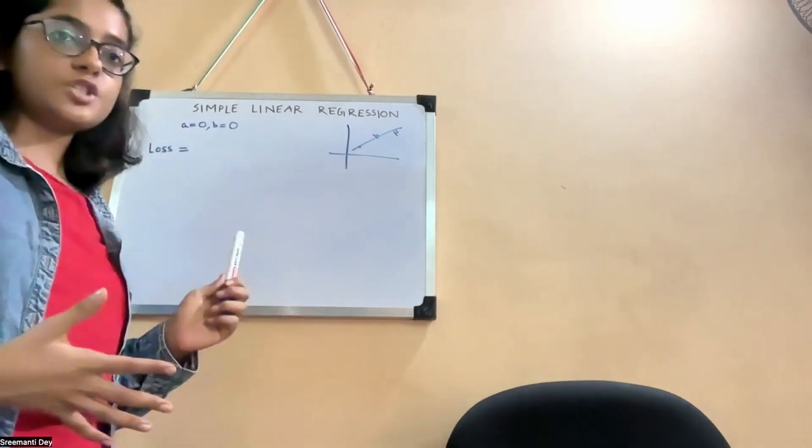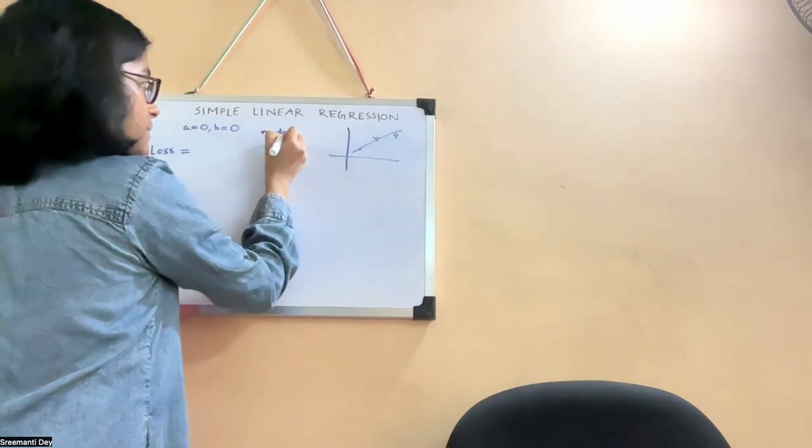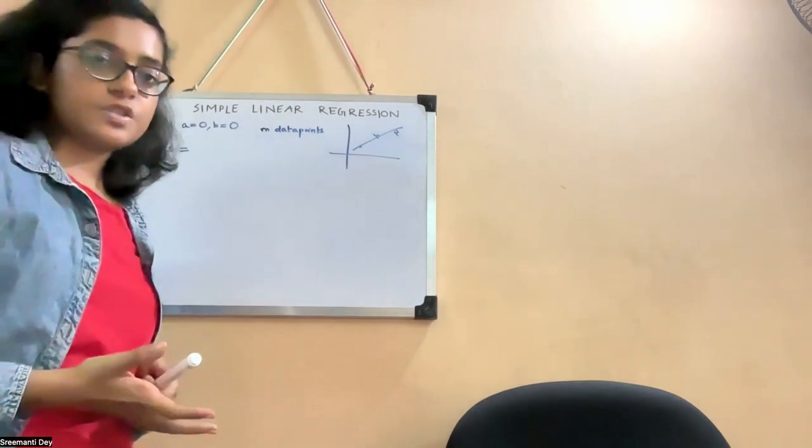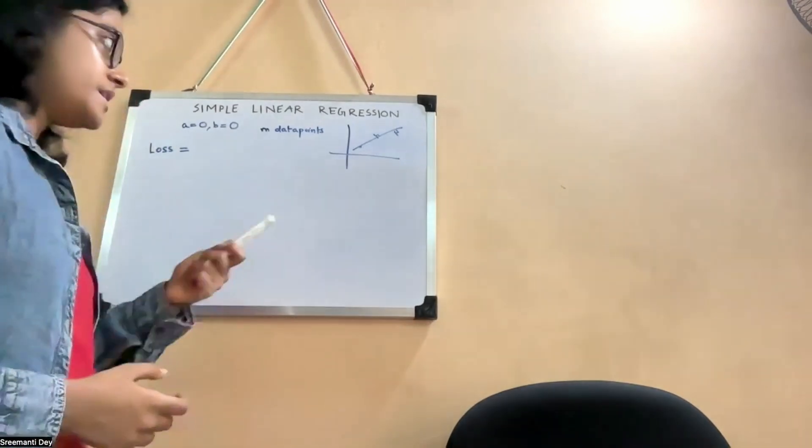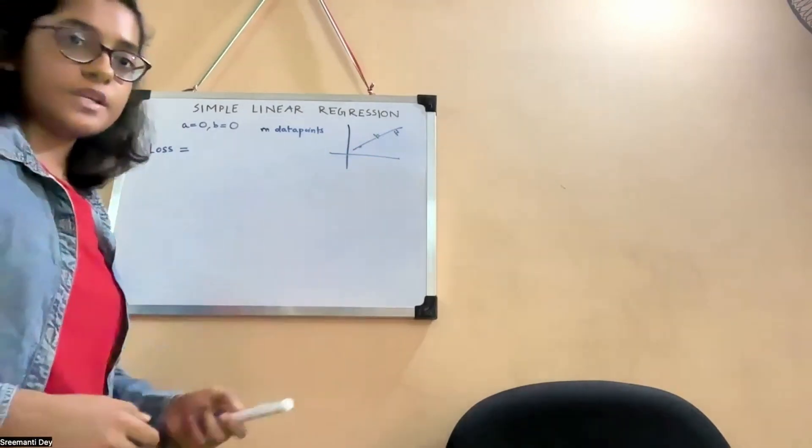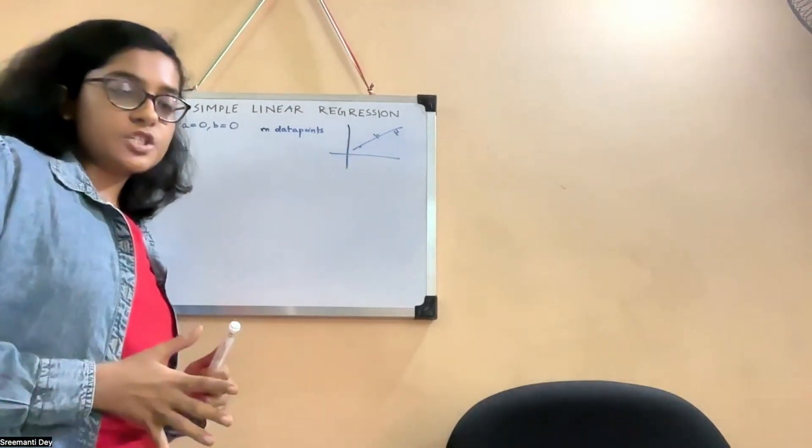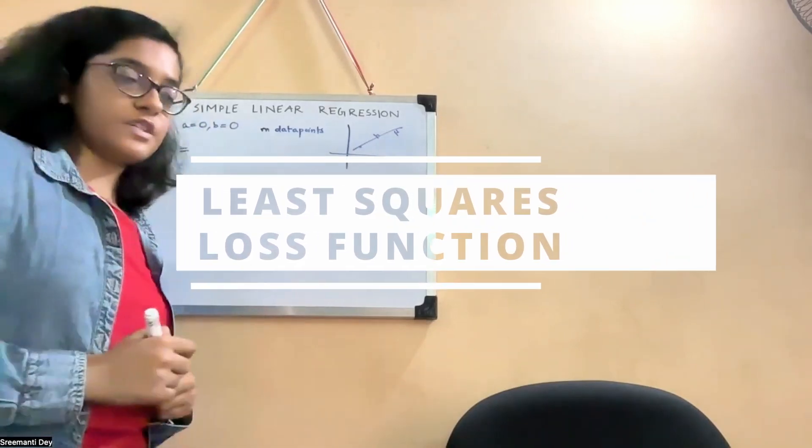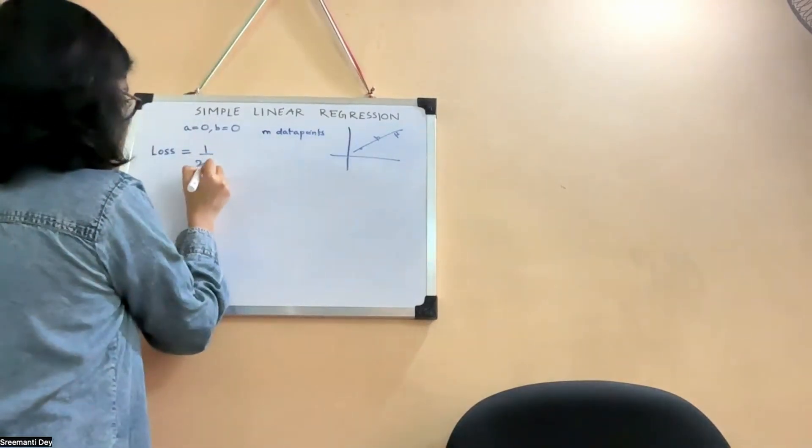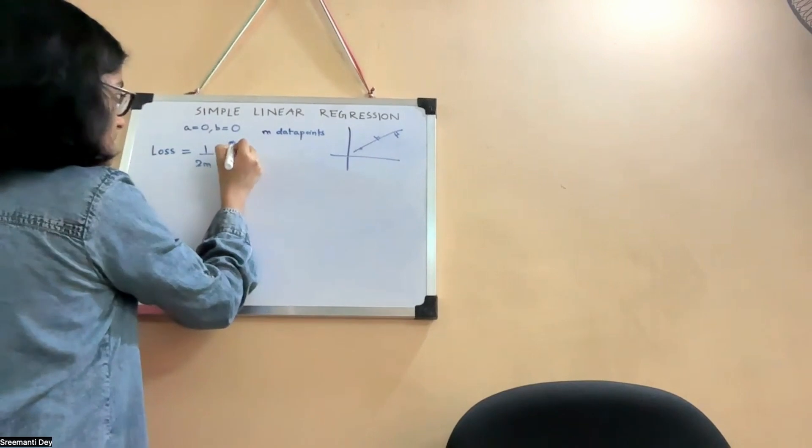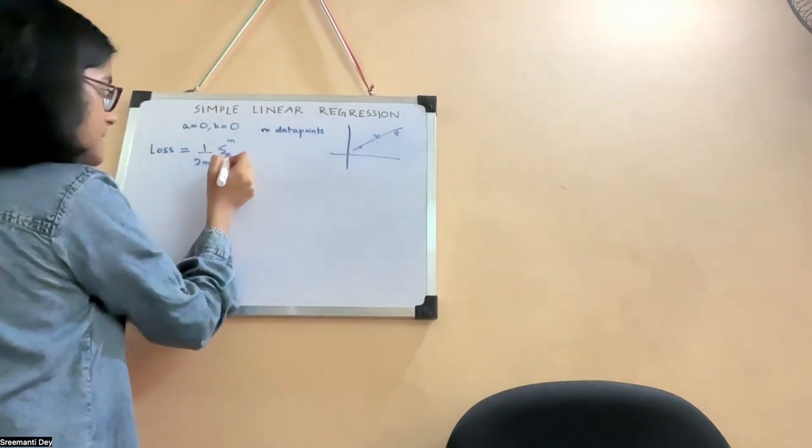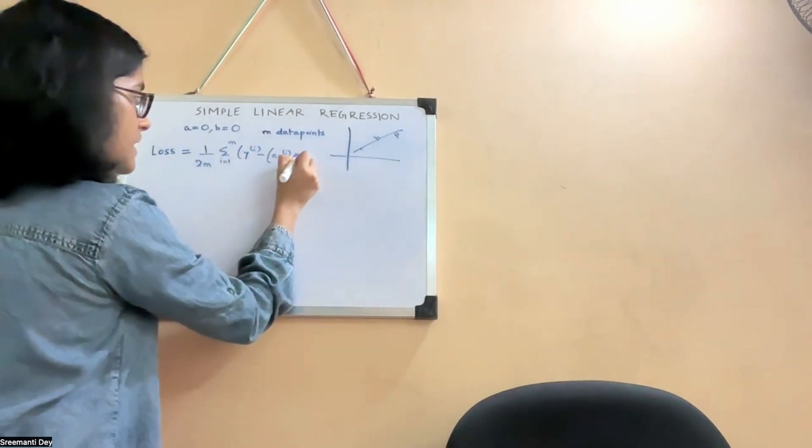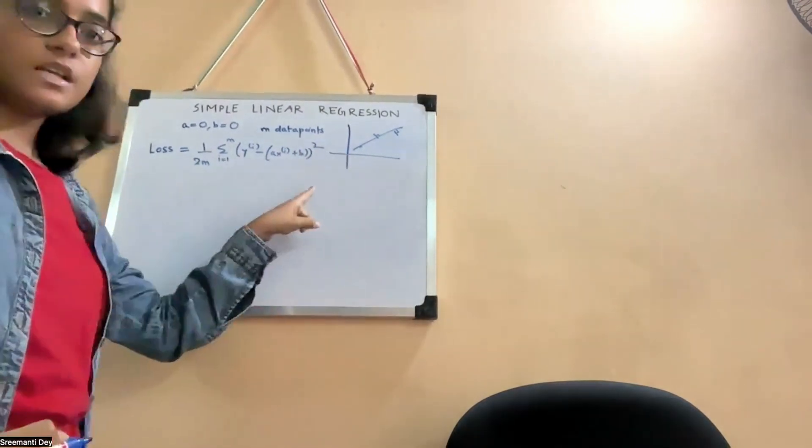So I'm initializing with zero, zero. You can also initialize it with random values. After you have initialized these values, then the next step is getting a function for the loss. Intuitively, we have to take into consideration all the points. Let's say we have m data points in our dataset. We have to account for all the data points while writing the loss. There are many functions of losses, but we are going to look at the least squares loss function. That is the most common loss function.